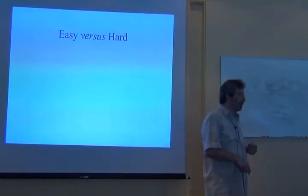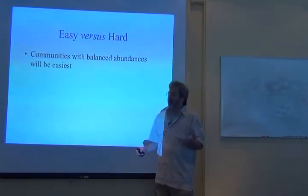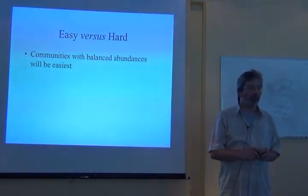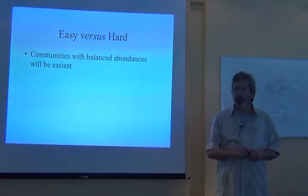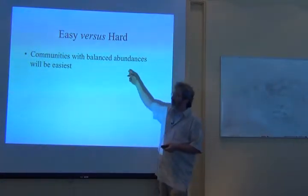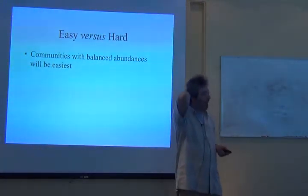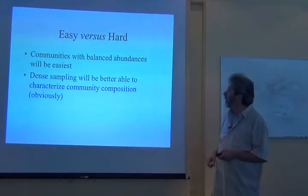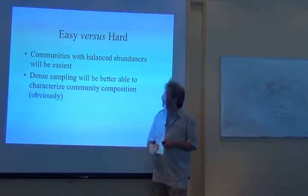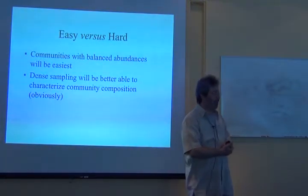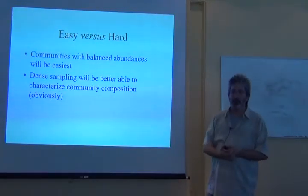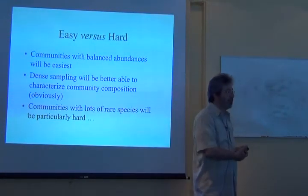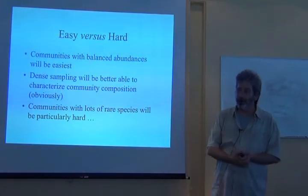Let's think about easy versus hard situations. Obviously, small communities are easiest — much easier to make a catalog of a community of two or ten species than 2,000 or a million species. Where species abundances or species probabilities of ending up in samples are fairly even, it's going to be easier. Good dense sampling is better; sparse, occasional, irregular sampling is going to be worse. Communities with lots of rare species are going to be awfully hard to work with.